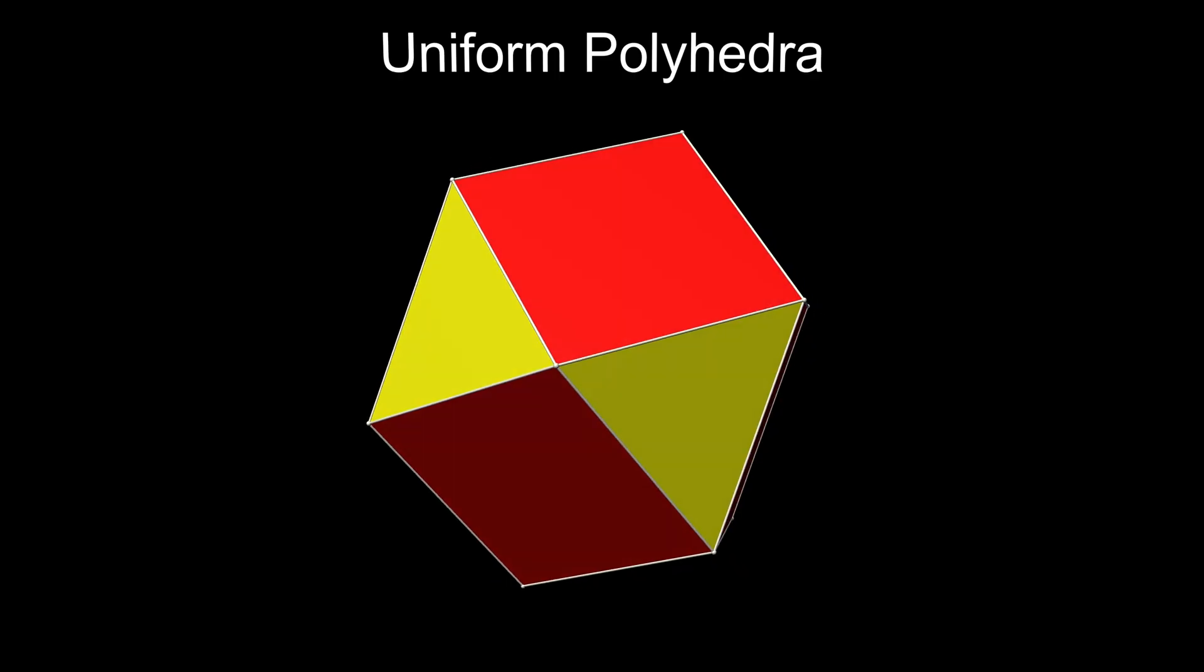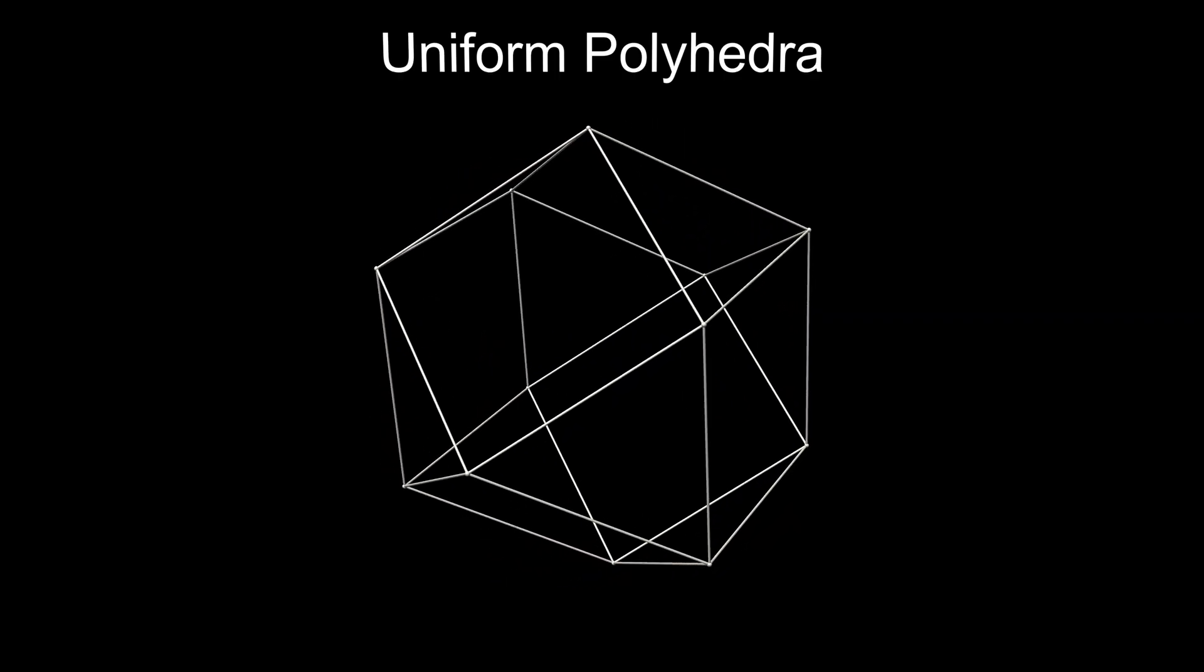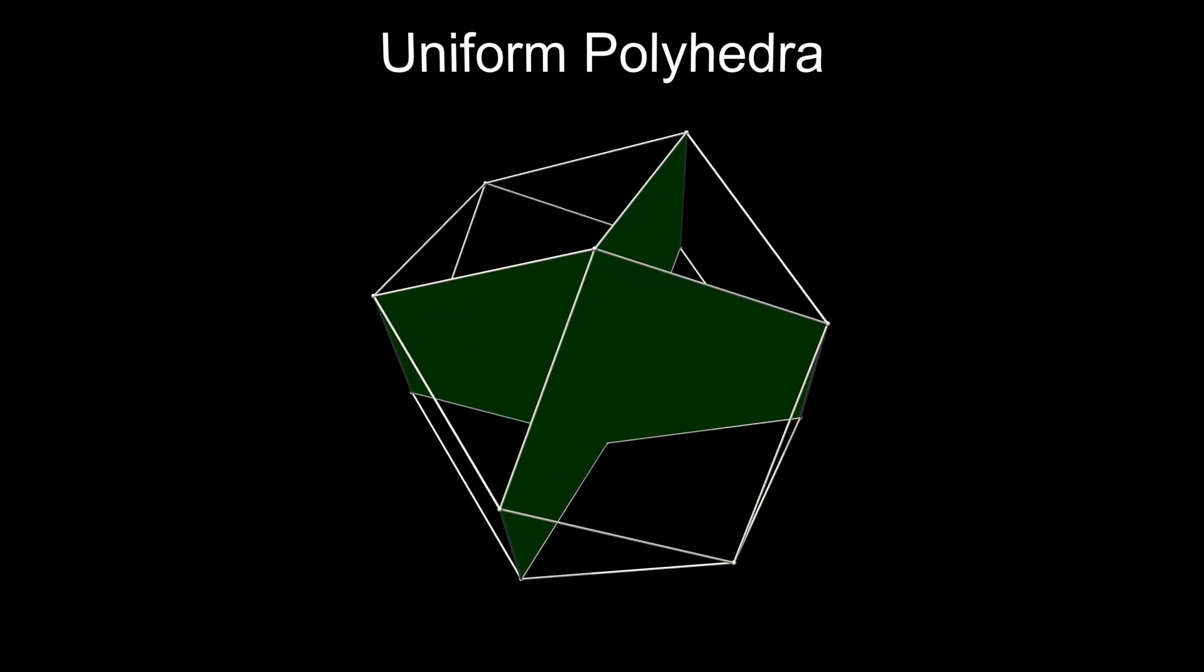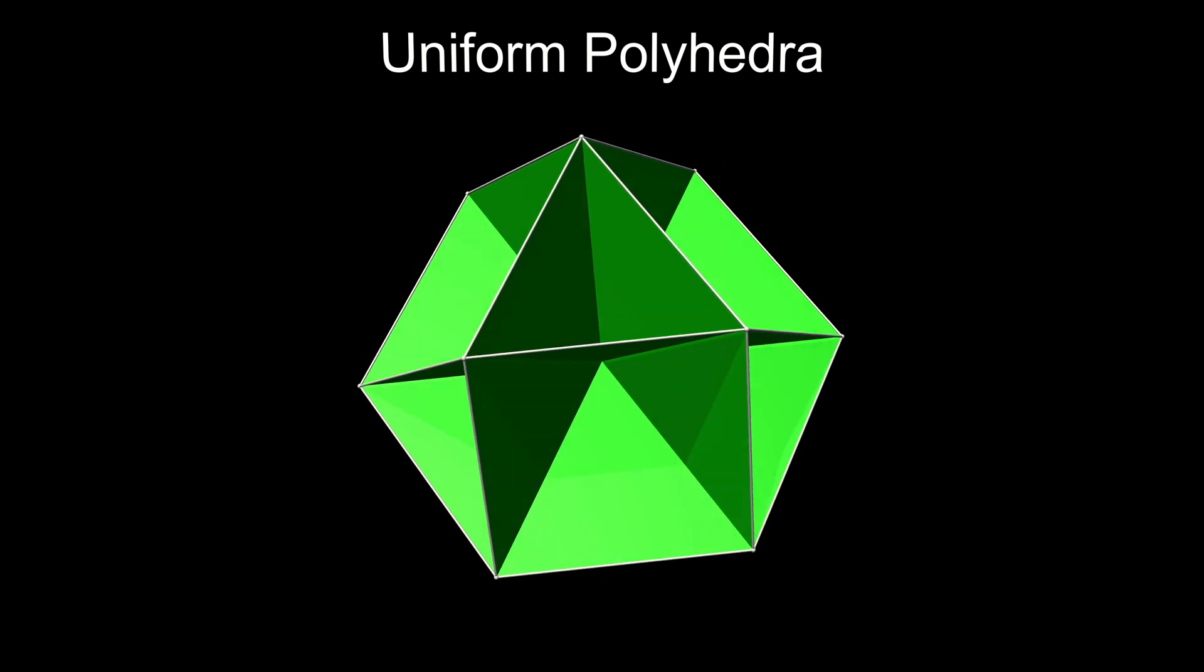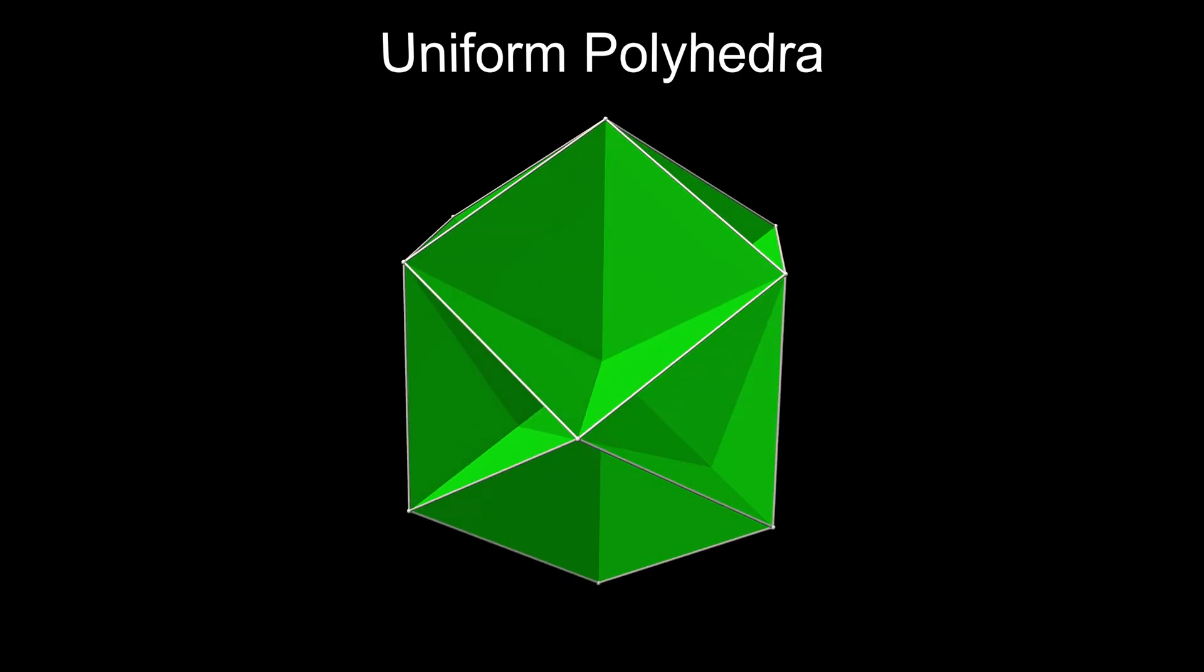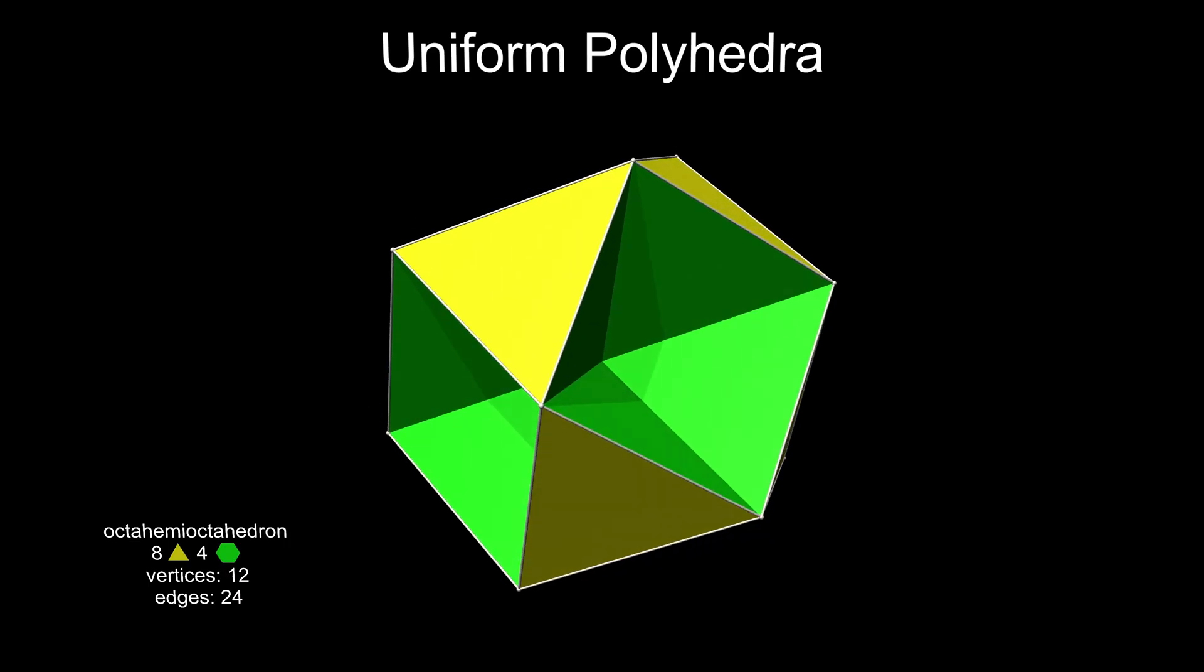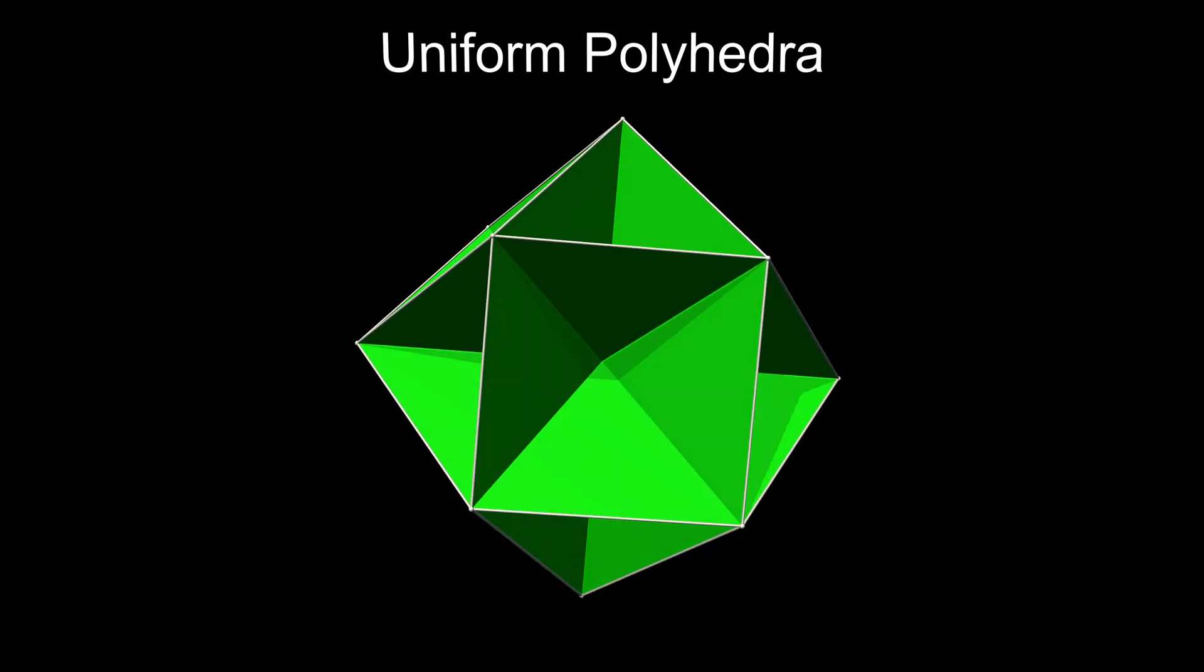More hemipolyhedra can be generated from the cuboctahedron. Four hexagons can be fitted through the centre. If the original triangles are restored, it creates the octahemioctahedron. Alternatively, the hexagons plus the original squares create the cubohemioctahedron.